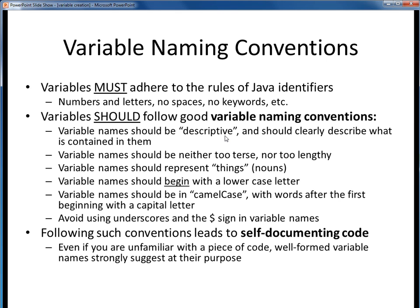Variable names should be descriptive and should clearly indicate what they represent. Variable names shouldn't be too short or too long — as Goldilocks would say, they should be just right. By good conventions, variables should be noun-based and represent things. Variables should begin with a lowercase letter and should be in camel case, where any words after the first one begin with a capital letter internally. And finally, we should avoid using underscores and dollar signs in good variable names. Note that none of these are musts, but rather shoulds — but they are all very well-established shoulds in Java convention.